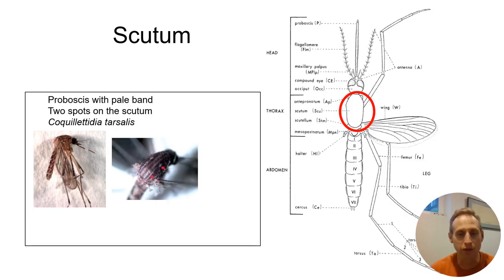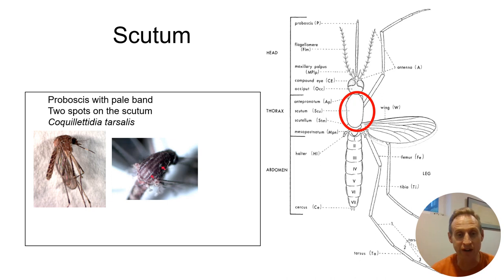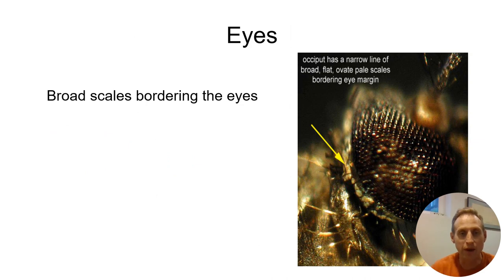Another character worth noting is something called the scutum. The middle part of the mosquito is the thorax, and what covers the bulk of the thorax — it looks a little like a helmet — is called the scutum. It has sort of a helmet-like protection over the top, and there are several characteristics to look for: some have spots, some have bands, some are light colored, some are dark colored. Be on the lookout for that character when you're going through your key.